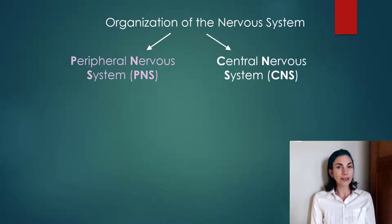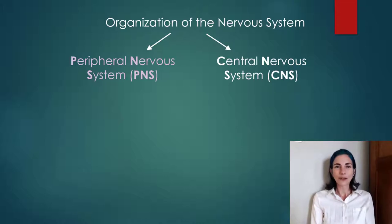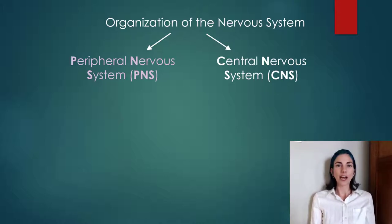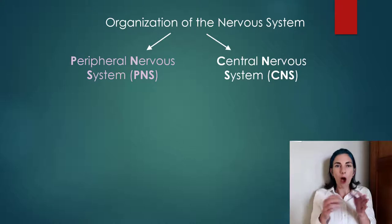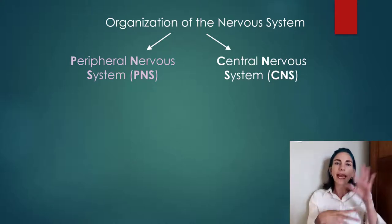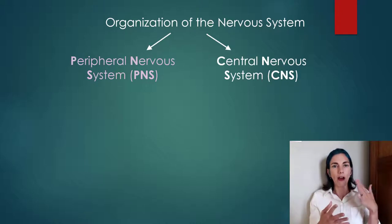I have learned the importance of enunciating every letter in those initials — if you do not, you say a different word, so make sure when you speak it you enunciate PNS with a pause. The central nervous system is comprised of the brain and the spinal cord. The peripheral nervous system is mostly the nerves. When we open up one of those nerves, we find a bunch of long cells called neurons.